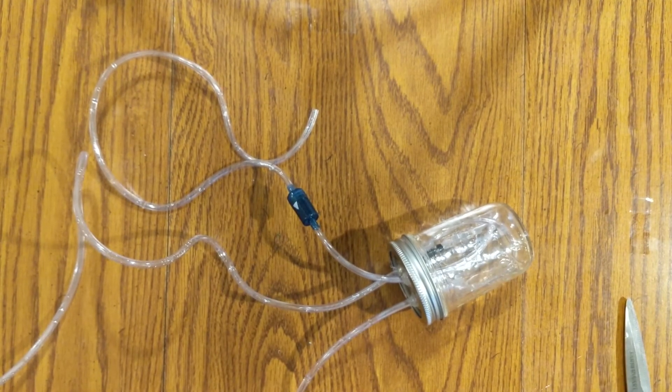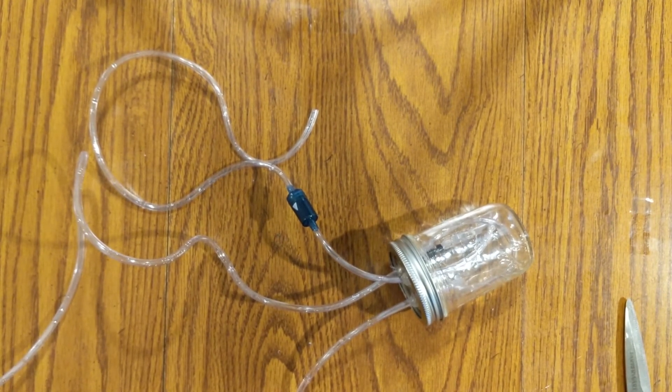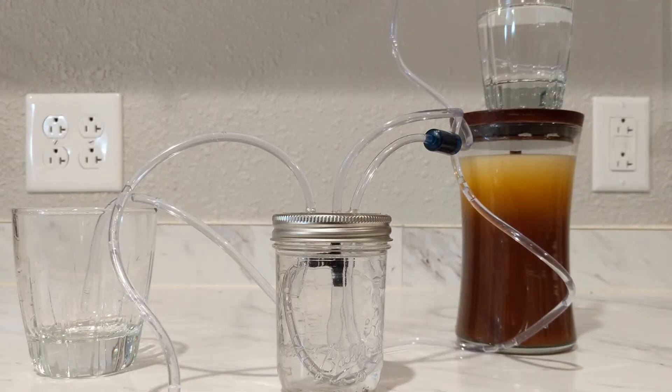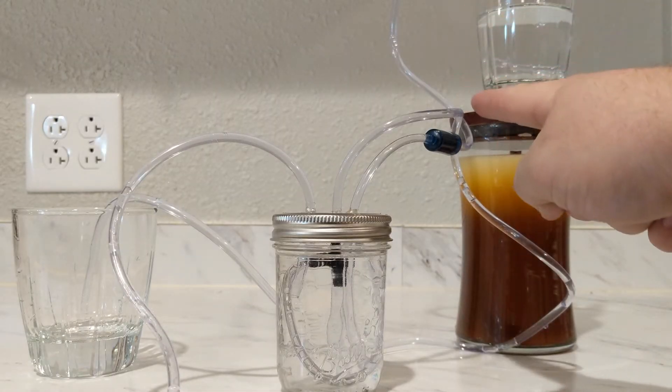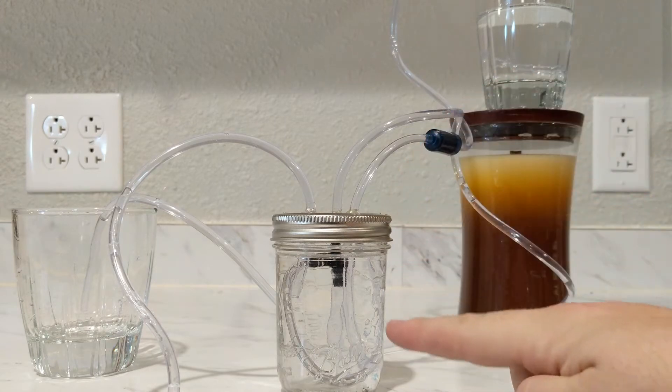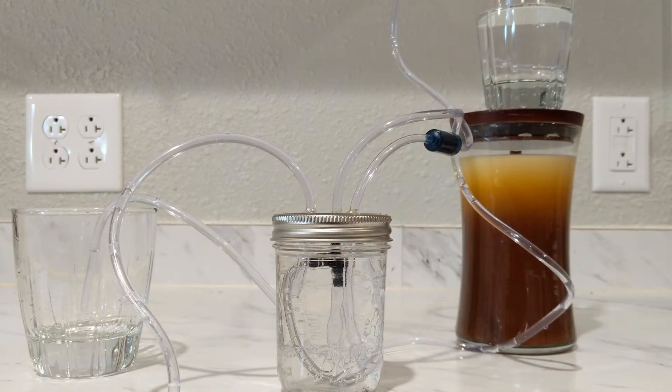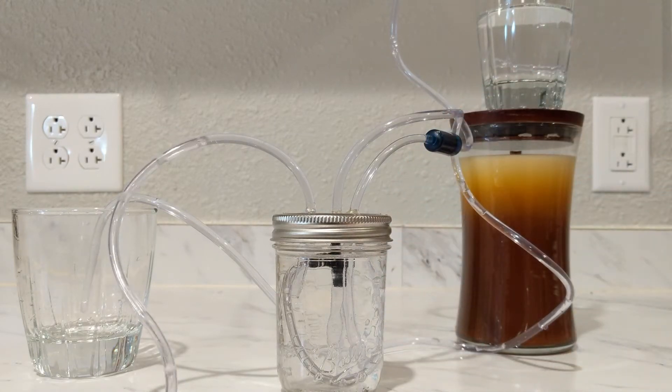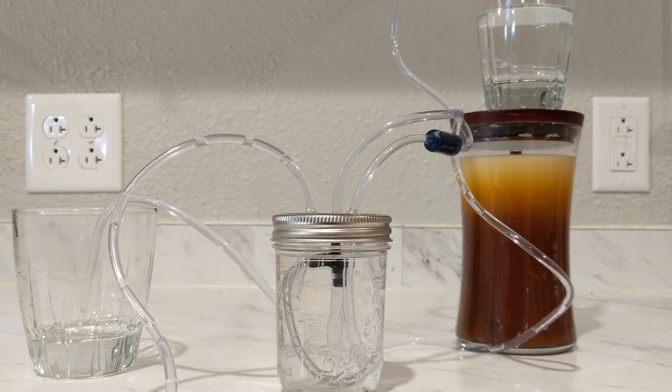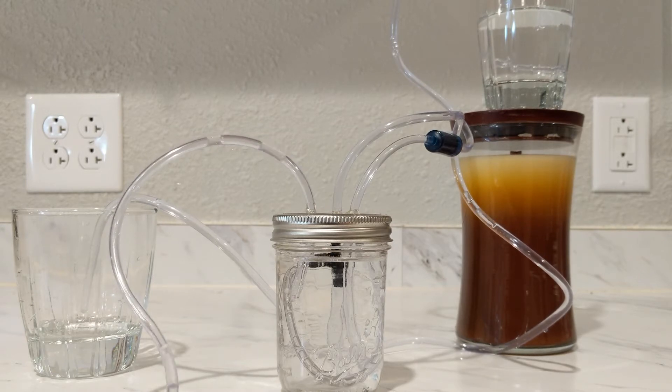And that's pretty much it. Let's go test it out. So we went ahead and primed the pump, which meant that we got the siphon started and filled the jar up to the top with water. Now watch what happens when we add air. We'll speed it up a little bit because this is a slow process with this small pump.